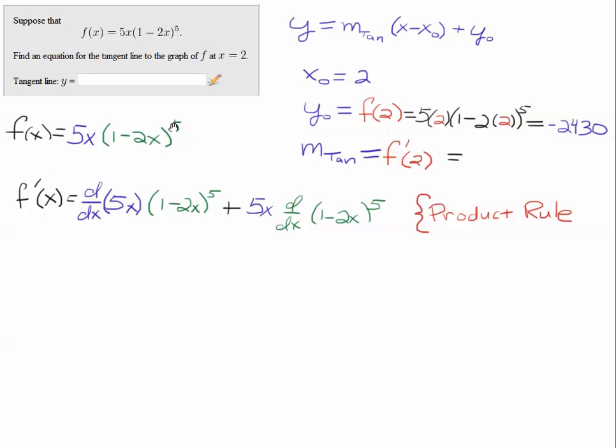We're going to have to use the product rule. So we take the derivative of this term, the second term left alone, plus the first term left alone, times the derivative of the second term.